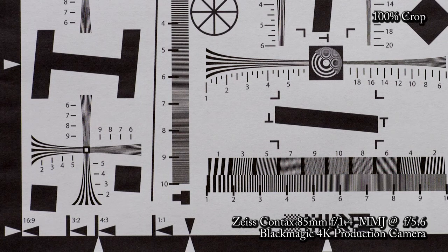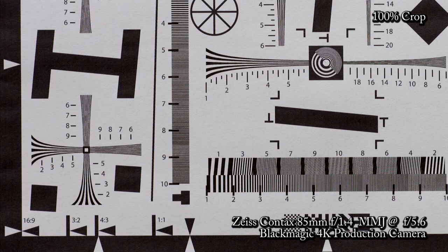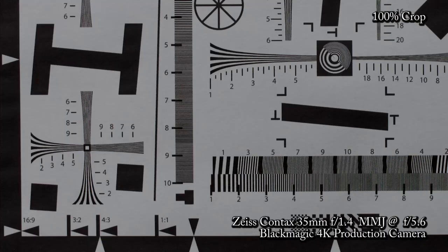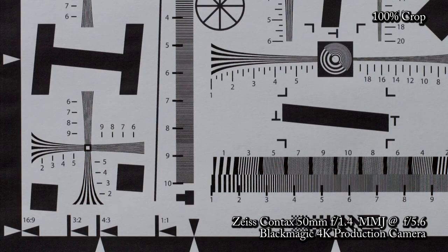Then there's the Zeiss Contax range with 85mm, 50mm and 35mm f1.4 MMJ-EF lenses. These are the type of old lenses where when you discover them you feel like you've come across a bit of a secret. The 35mm isn't what anyone would call cheap but compared to the modern Zeiss price it certainly is. And the 50 and 85 are steals.